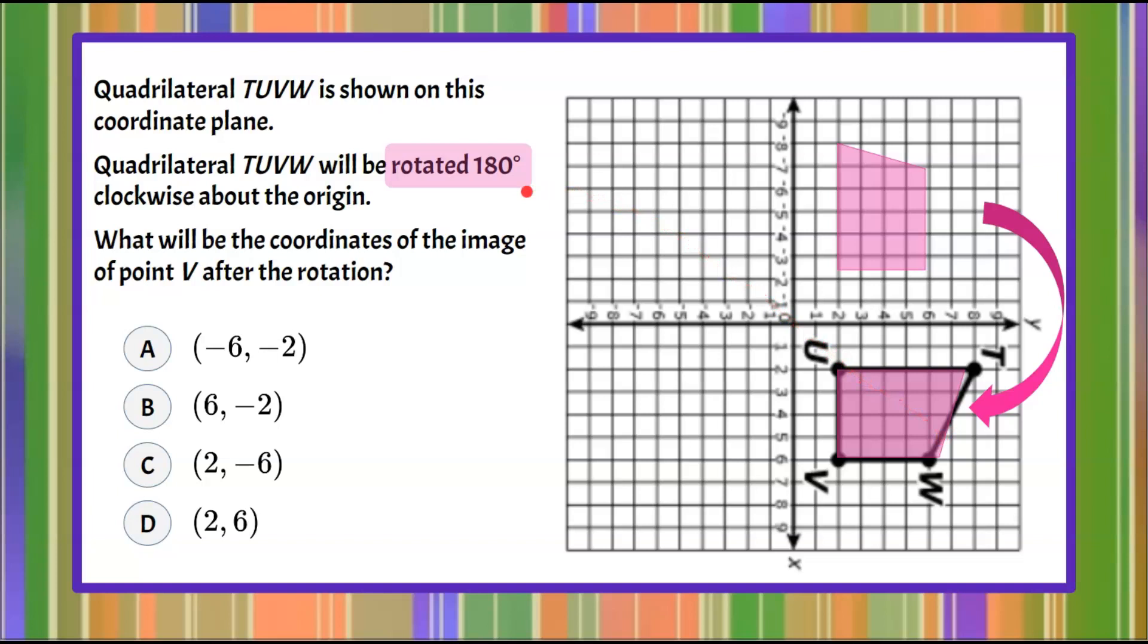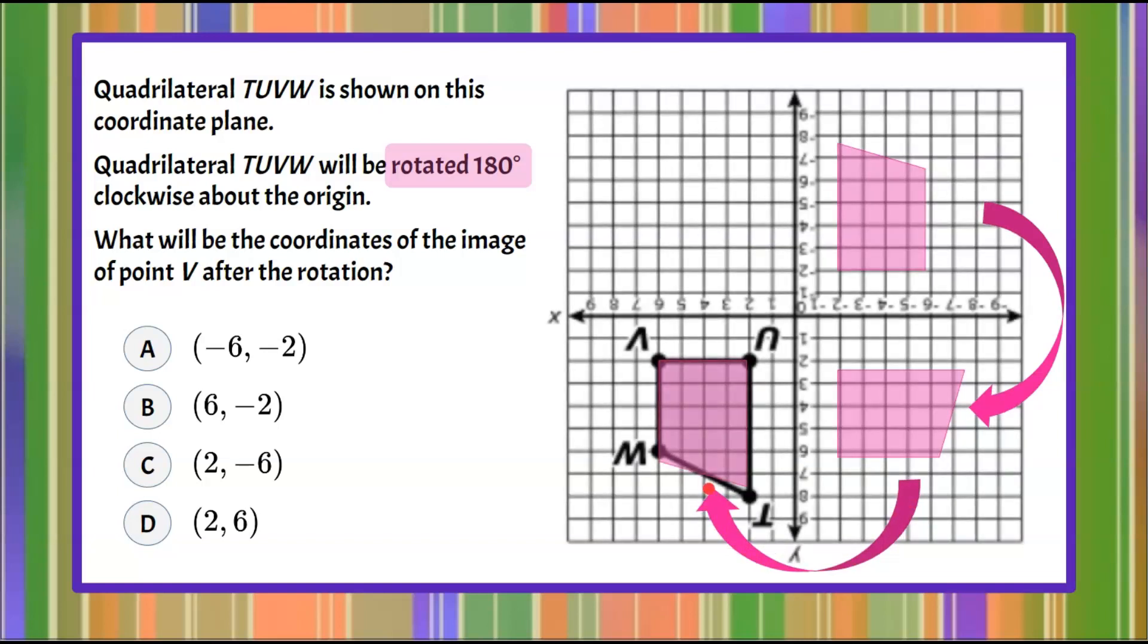We need to go one more turn to do 180. Here we go. We're going to do our second turn clockwise about the origin, and here we go. So all I did was turn the coordinate plane twice. So it went from here, one turn 90 degrees, two turns 180 degrees.